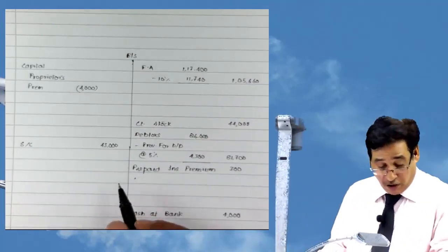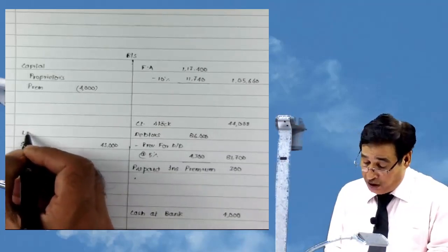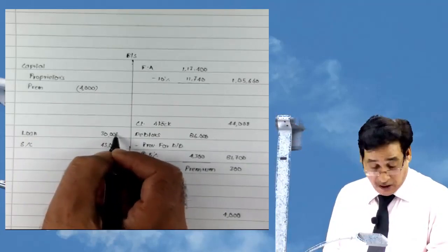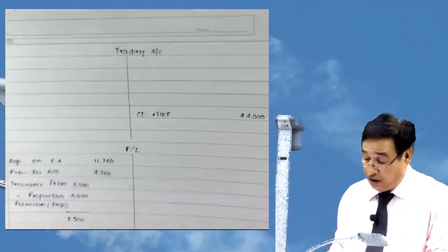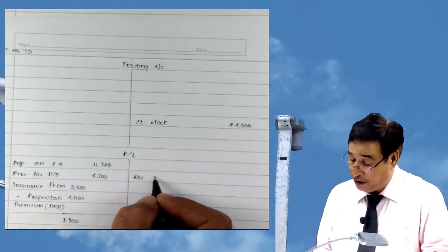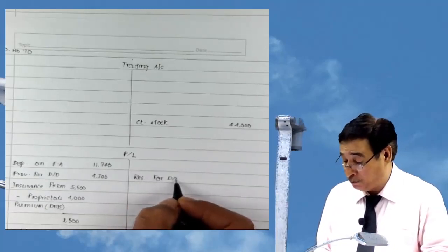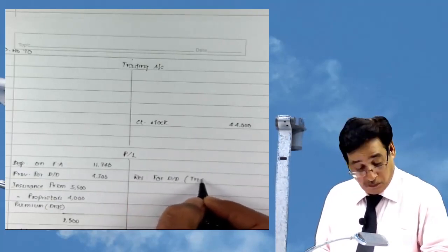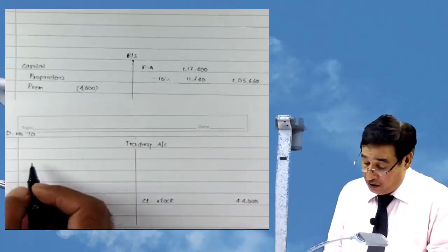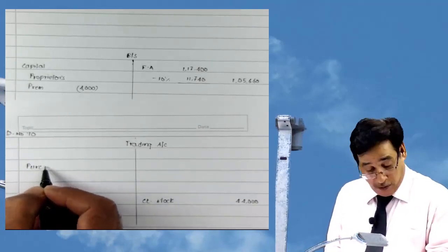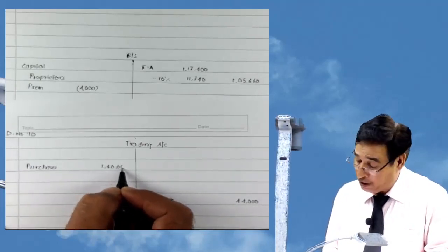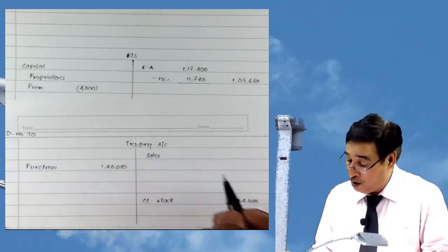Fixed asset we have taken care of. Loan is also there — loan is towards the credit side, it is a liability. No percentage is given this time, so no problem: 30,000. Reserve for doubtful debts given in the trial is presented towards the credit side — that is reserve for doubtful debts as per trial: 3,000. Purchases: amount is 1 lakh 40,000. Amount of sales is 2 lakh 30,000.